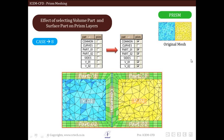In the final case, we select all parts — Part 01, Part 02, and Common — for prism growth, and also select both Volume 01 and Volume 02. Prism layers are created in both volumes along all surfaces. This confirms that selecting no volume part is the same as selecting all volume parts, and in both cases the mesh is created through and through in all volumes. To restrict prism mesh to individual volumes, we must explicitly check those volumes; otherwise, prism layers will be created in all volumes.